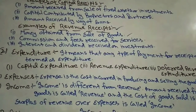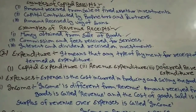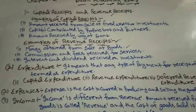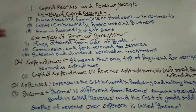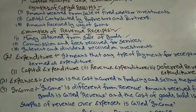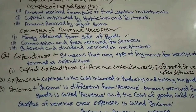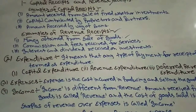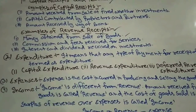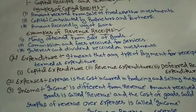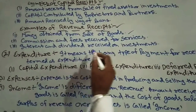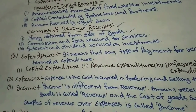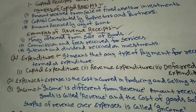The next point is commission and fee received from services. If we have provided any service to persons or a business, and on the basis of that service we are receiving commission, then in that condition the income generated is called revenue receipts.